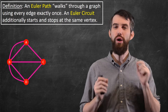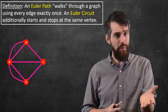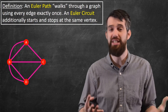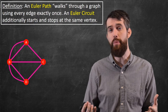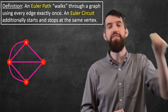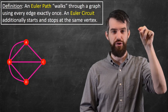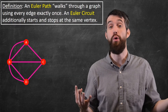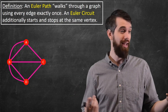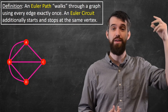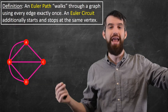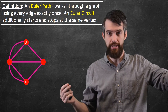An Euler circuit is the same idea — everything has to be hit once — but you start and finish at the exact same vertex. So it makes a loop, and then we call it an Euler circuit, instead of an Euler path that might start somewhere, go through, and end up somewhere else.